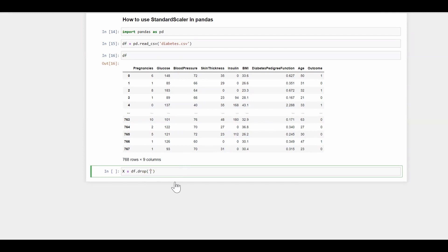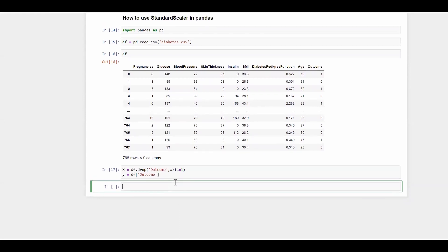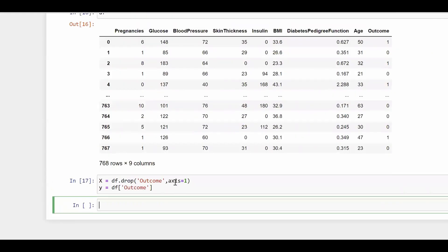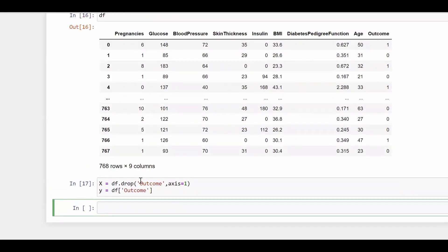So the target is the outcome and the remaining are all the predictors. I'll choose my x equals to df.drop outcome, axis equals to one. And simply y is my outcome which is not going to get scaled. So I'm just scaling all my predictors. Now I have bifurcated my data into x and y.